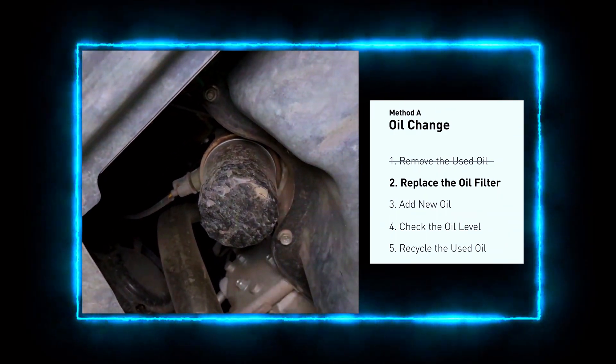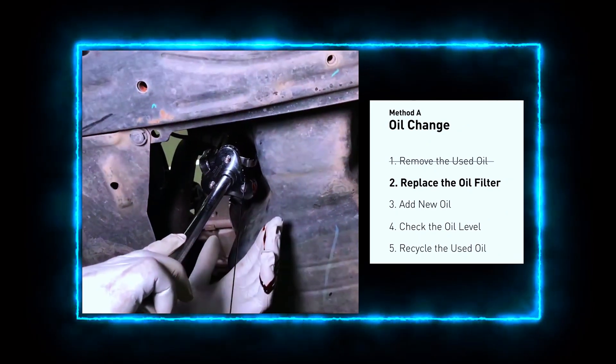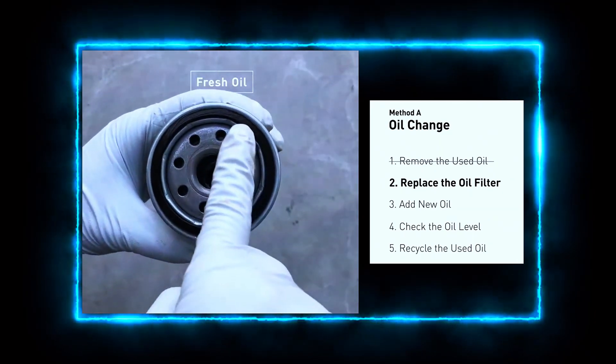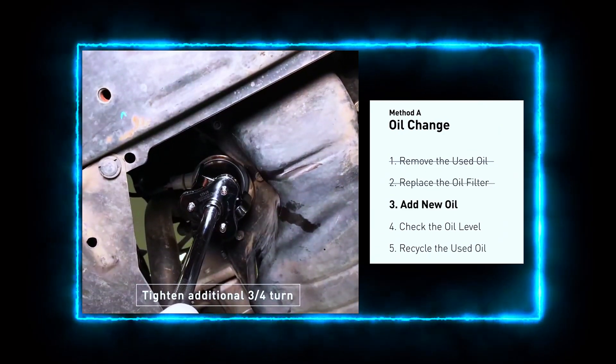Now, let's replace the oil filter. Using your oil filter wrench, loosen and remove the old filter. Before installing the new one, lubricate the rubber gasket with a bit of fresh oil. Screw on the new filter hand tight.